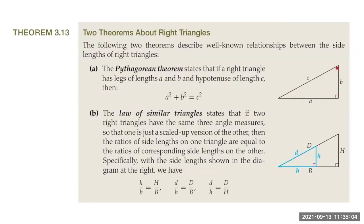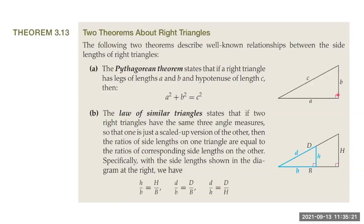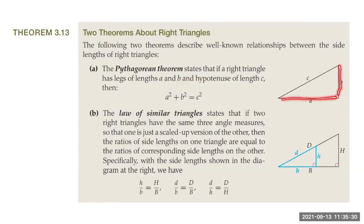We also have the Pythagorean theorem: if you have a right-angle triangle where one angle is 90 degrees, and the sides are a, b, and c — where c is the hypotenuse, the side opposite the right angle — then a² + b² = c².